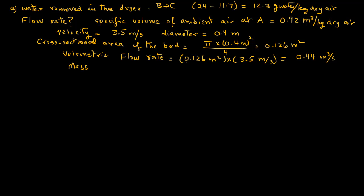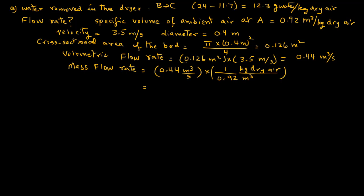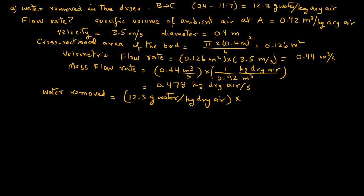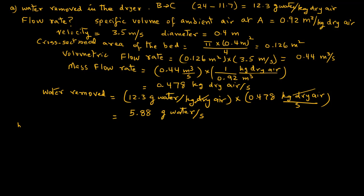This is the volumetric flow rate. To convert it to mass flow rate we divide by the specific volume: 0.44 cubic meters per second divided by 0.92 cubic meters per kilogram dry air, giving us 0.478 kilograms of dry air per second. Then the water removed in the dryer is 12.3 grams of water per kilogram dry air times 0.478 kilograms dry air per second, which gives us 5.88 grams of water per second as our answer for part A.